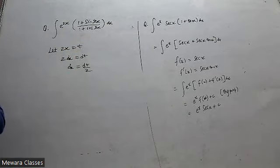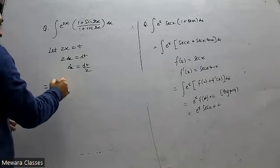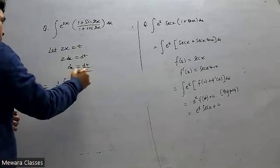So dx is dt by 2. Now in place of every 2x, put t. So you get 1 by 2, e to the power t.